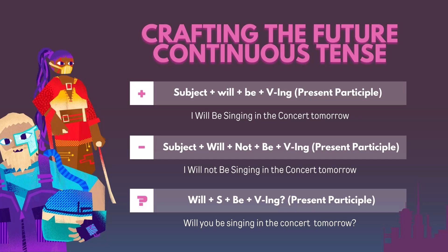Question Sentences: Will + Subject + be + V-ing? (present participle). Example: 'Will you be singing in the concert tomorrow?'